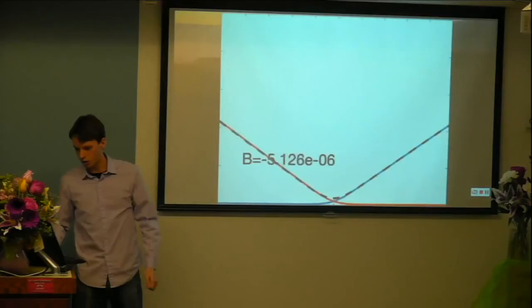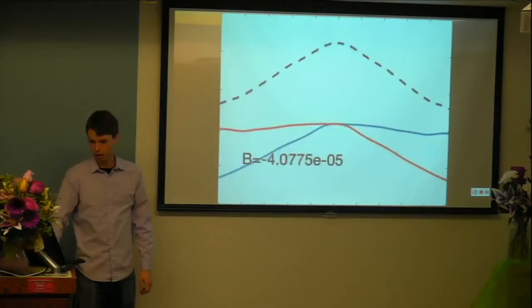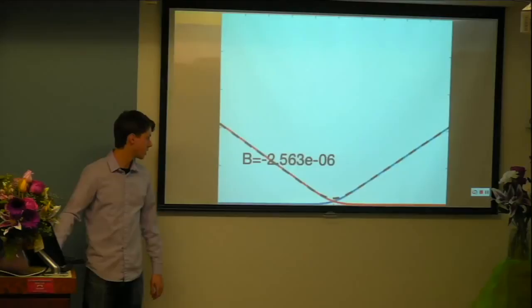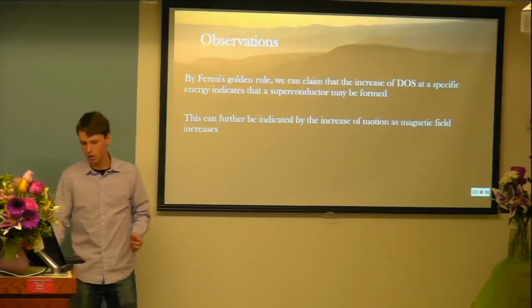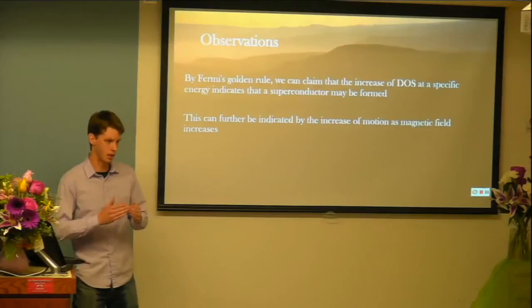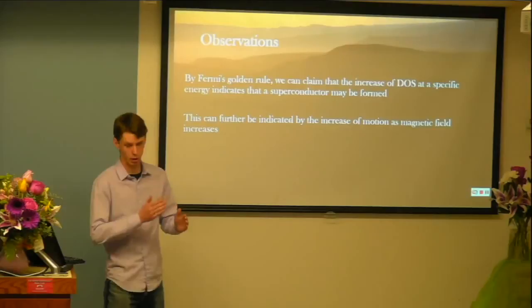And so this is just a video of all of those kind of mapped out, kind of what that would look like. Just for a little bit of a better visualization of the density of states over time. Okay, so some observations that could be made here again by Fermi's golden rule. It can claim that as density of states increase at one specific energy, that you could maybe see a superconductor being formed.